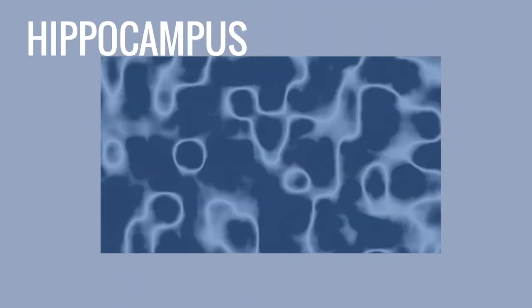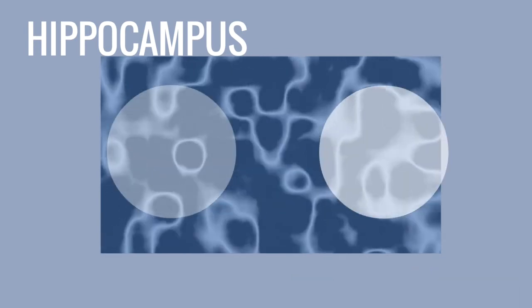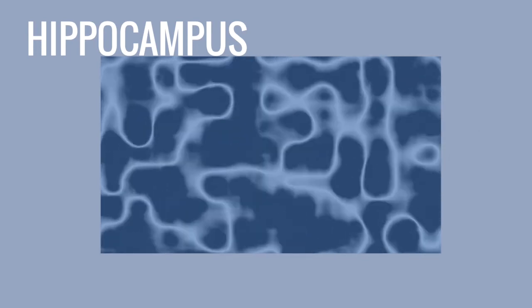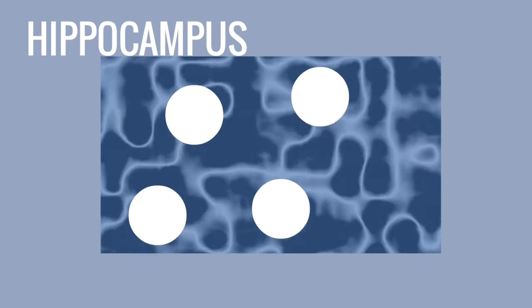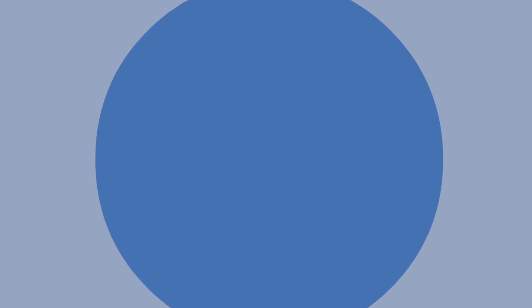Although the hippocampus itself doesn't store memory, it is absolutely vital in consolidating memories. Long-term memories are not stored in one part of the brain, but rather widely distributed throughout. Numerous scientists believe that the hippocampus replays events of the day to the neocortex, which processes the memory, creating a long-term memory.